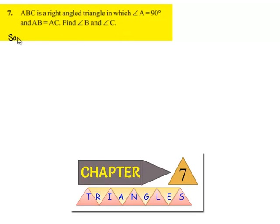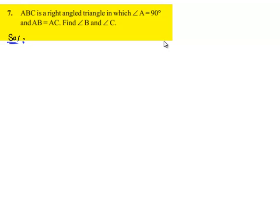Now moving on to the solution. Given that ABC is a right-angled triangle at A and AB equals AC, find angle B and angle C.